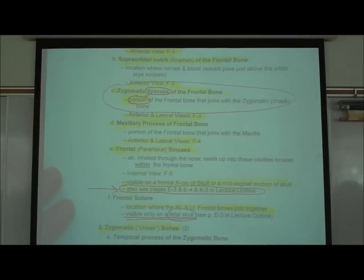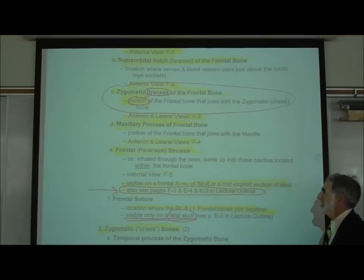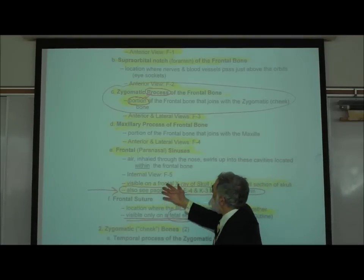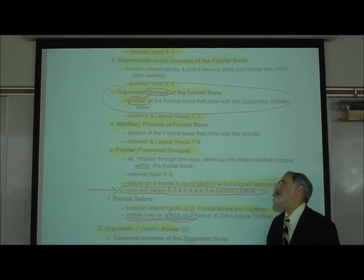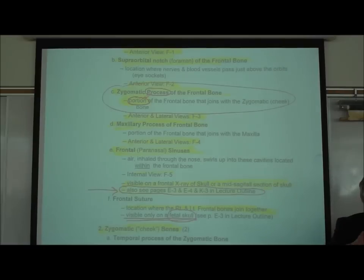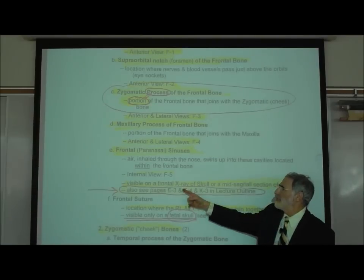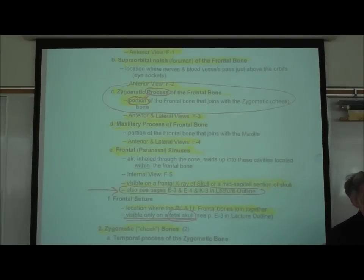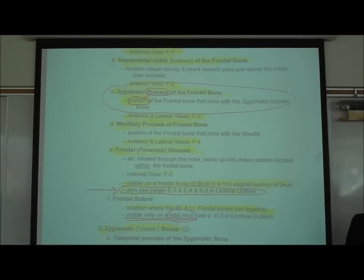Back on page two, the frontal paranasal sinuses. These are air cavities — when you inhale air through your nose, it swirls up into these hollow cavities called sinuses, and you have sinus cavities in your frontal bone. You cannot see these hollow cavities by looking at a skull, but they are visible on a frontal x-ray. See pages E2, E4, and K3 in the lecture outline. Let's take a quick look at pages E2 and E3.